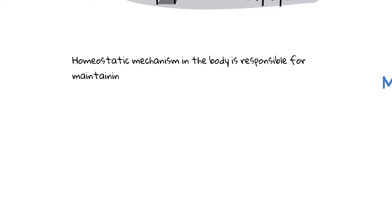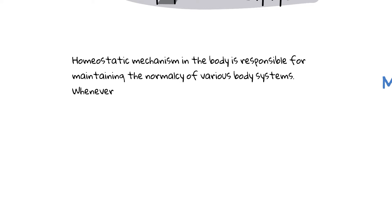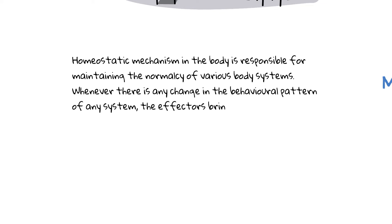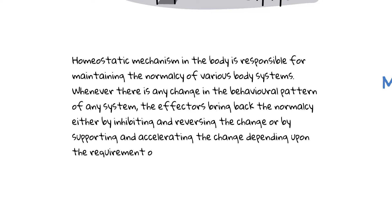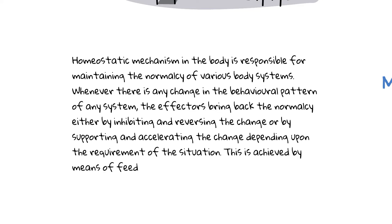The homeostatic mechanism in the body is responsible for maintaining the normalcy of various body systems. Whenever there is any change in the behavioral pattern of any system, the effectors bring back the normalcy either by inhibiting and reversing the change or by supporting and accelerating the change, depending upon the requirement of the situation. This is achieved by means of feedback signals.